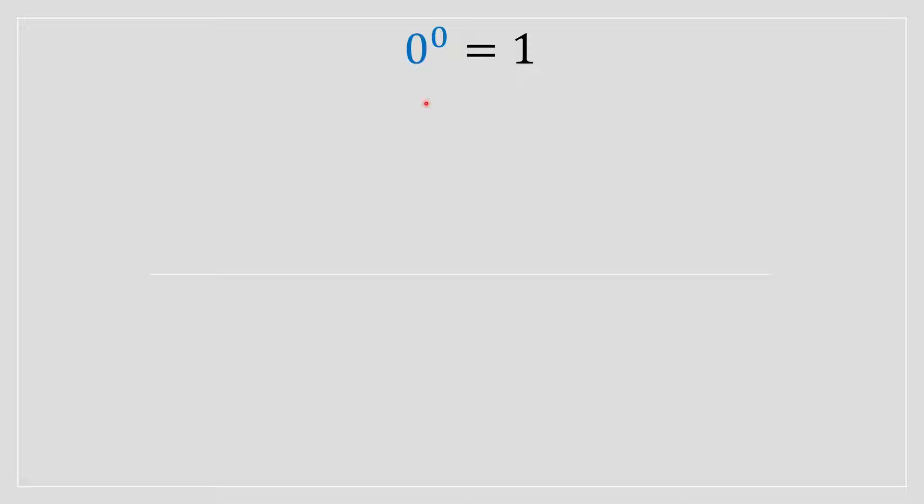Right, first things first, let's rewrite 0 to the power of 0 as 0 to the power of 1 minus 1. 1 minus 1 is equal to 0, so that's alright, right?